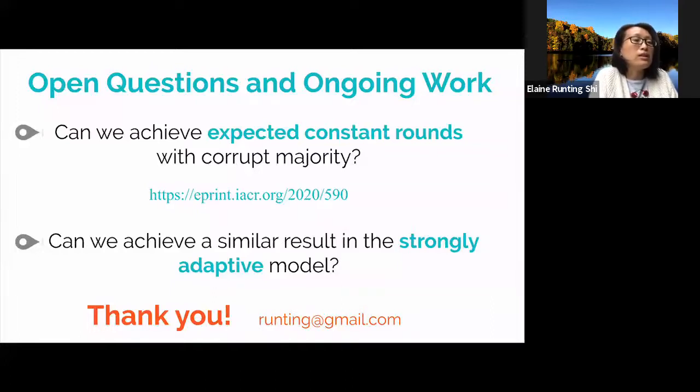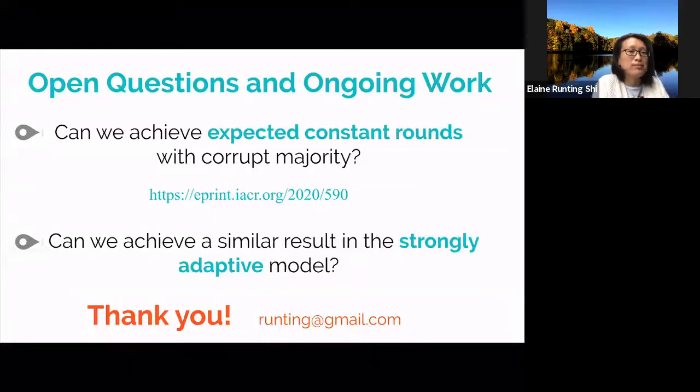Okay, so now the second natural question is whether we can achieve a similar round complexity result, but now under the strongly adaptive corruption model. In this model, once the adversary adaptively corrupts a player in a round, it can even erase the message the player had sent in the same round prior to becoming corrupt. So we are also working on the second open question. Thank you very much.